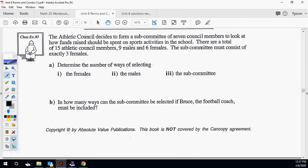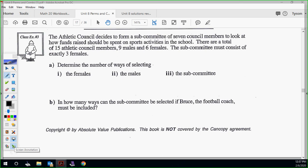The Athletic Council decides to form a subcommittee of seven council members to look at how funds raised should be spent on sports activity in the school. There's a total of 15 Athletic Council members, nine males, six females. The subcommittee must consist of exactly three females. Determine the number of ways of selecting the females. How do we select three females? 6C3. Because your females has to come from your female pool. That's the different ways you can choose the females. Six females, choose three of them. How many different ways can I choose three of that group?